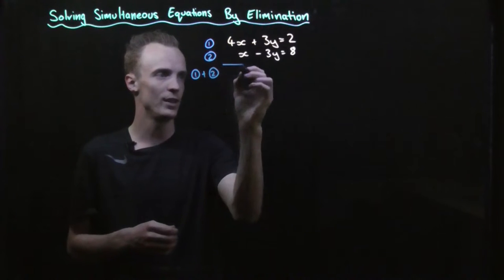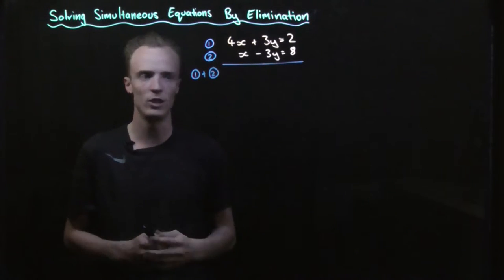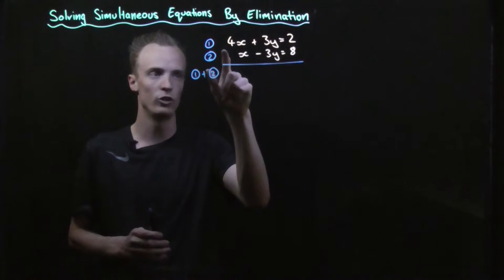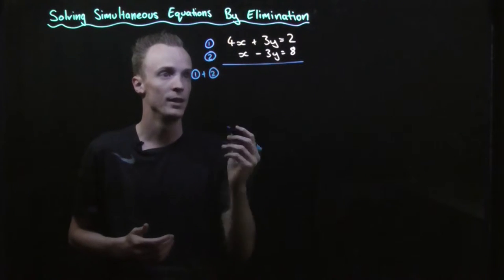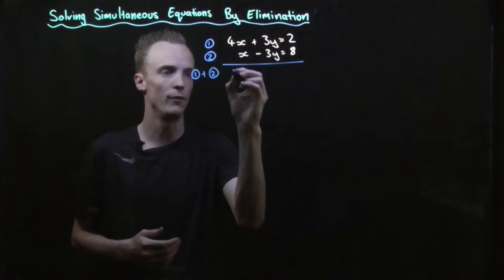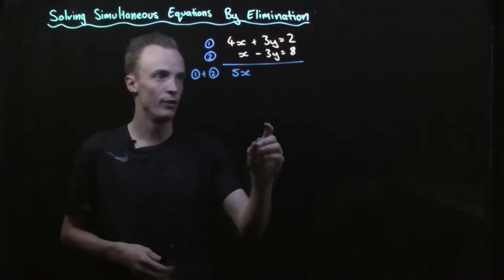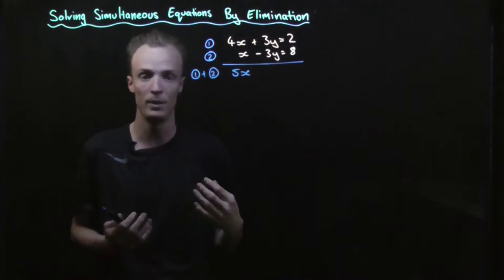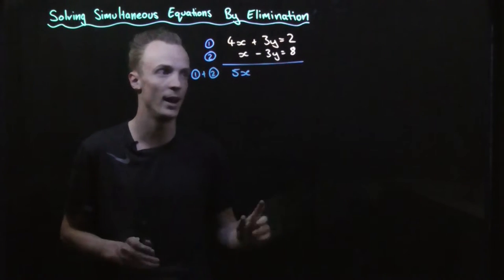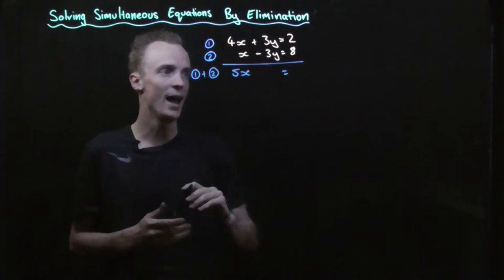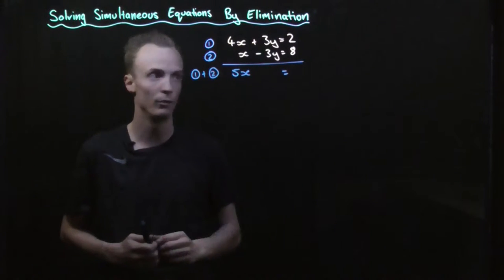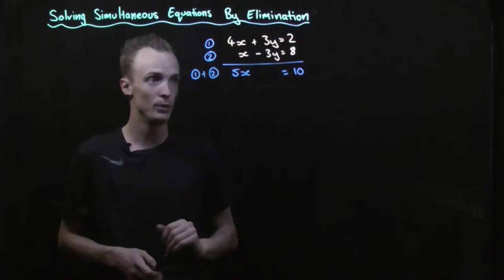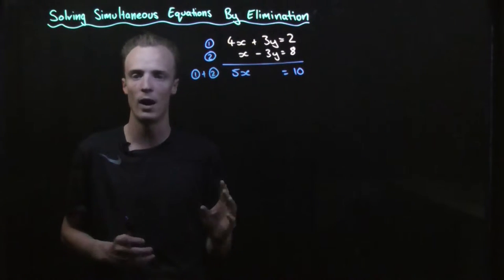We can think of this like a long addition problem where we add the coefficients of our x terms — so 4 plus 1 will be 5 lots of x. We add the coefficients of our y terms — so positive 3 subtract 3 will be 0y, so that's eliminated. And we add the numbers on the right — so 2 plus 8 which will equal 10.